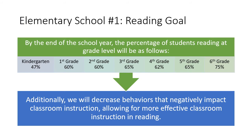Here's an example taken from a school's school trust lands goal. This is an elementary school with a reading goal. It says by the end of the school year, the percentage of students reading at grade level will be as follows: 47% for kindergarten, 60% for first grade, 60% for second grade, and 65% for third grade. These are very specific numbers, which I'm assuming they came up with based on prior data, realizing the goals are measurable, obtainable, and realistic. They also had an additional goal: to decrease behaviors that negatively impact classroom instruction, allowing for more effective classroom instruction in reading. So this is actually a two-part goal — one is students will read at grade level, and two is that they're going to decrease negative behaviors in the classroom.